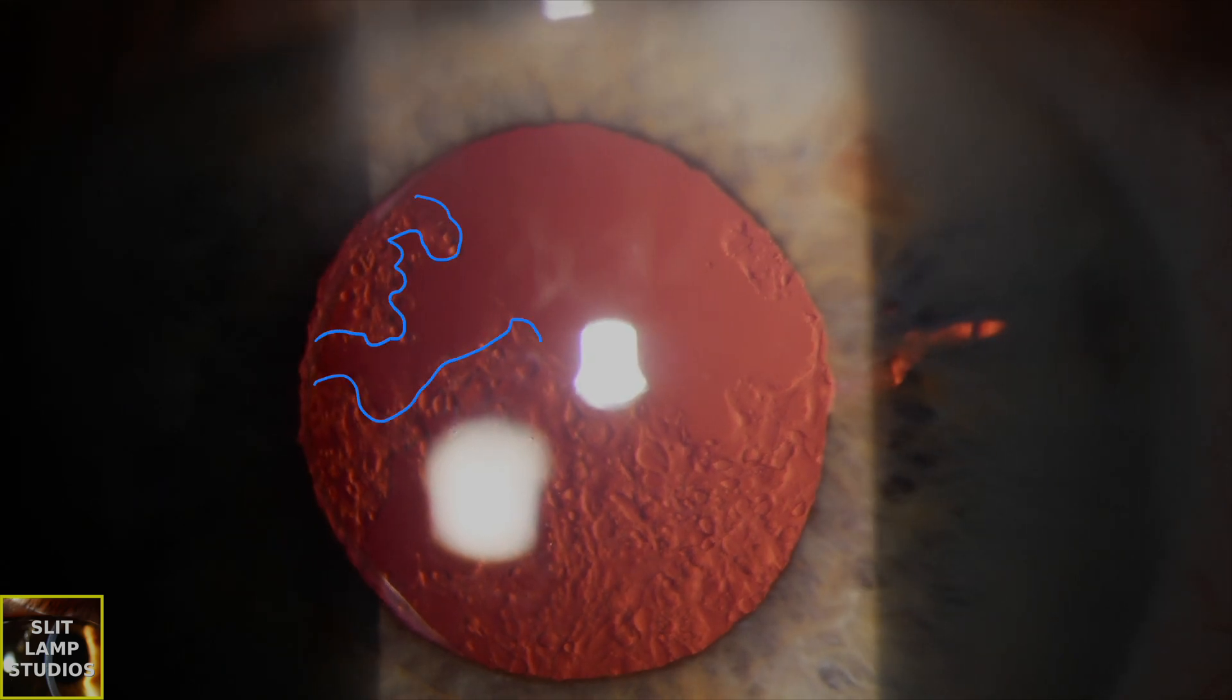Just for reference, let's draw that on there. And that's the area through which the PCO might be causing some visual blur. And you can really see that it is really in the central visual axis.